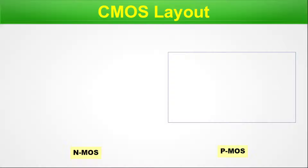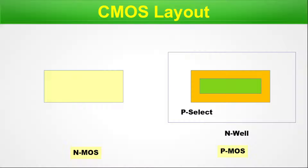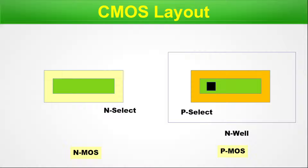Here we will show a CMOS layout and point out where the FEOL is, where the MEOL is, and where the BEOL is. On the left side will be the NMOS part and on the right side will be the PMOS. This is the NWELL on which our PMOS will be created. This is the PSELECT layer and the diffusion layer. Here you can see the NSELECT layer and the diffusion layer, along with the source-drain contacts. Before creating the contacts, all these things which were fabricated were in the FEOL.